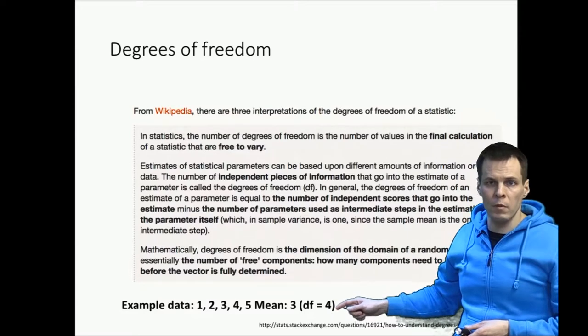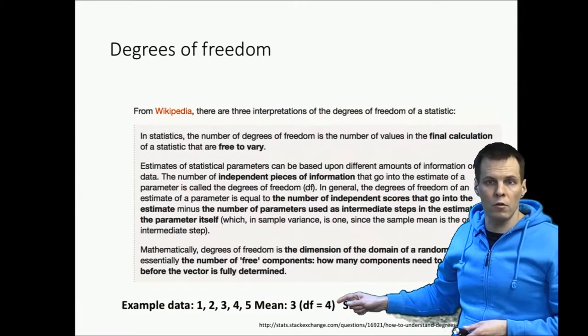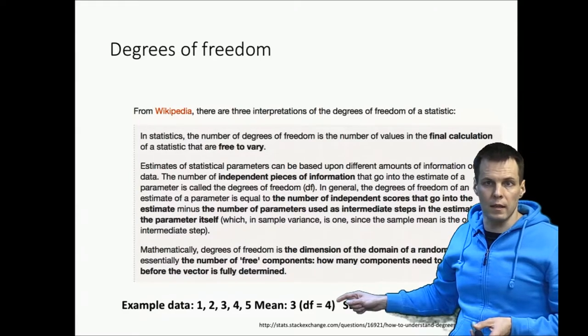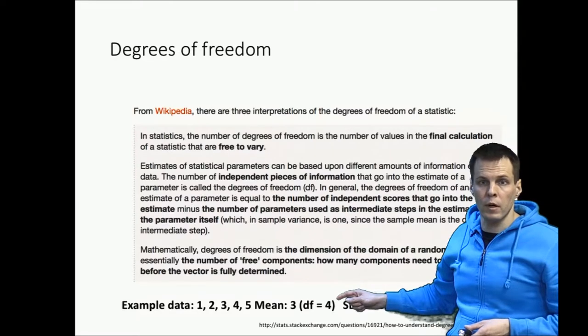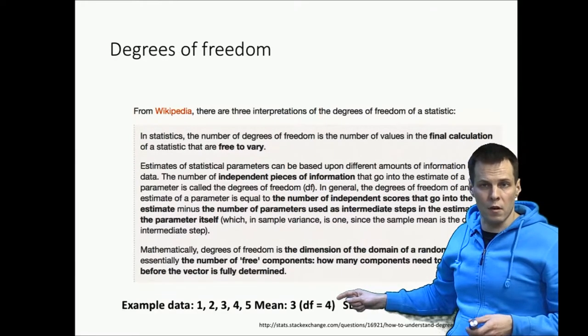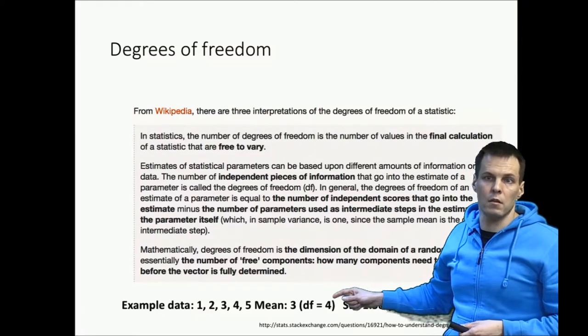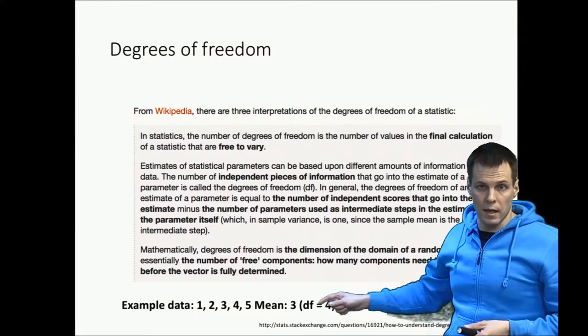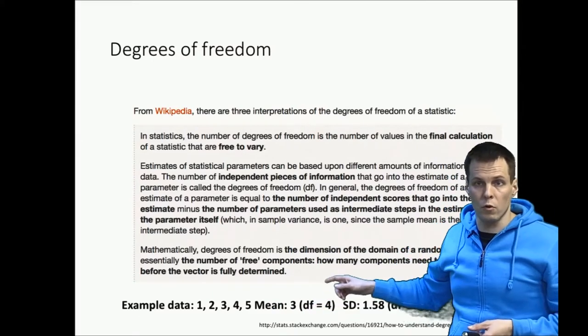What the degrees of freedom here tells us is that if we know the mean we only need to know four more numbers in the series to be able to say what the exact entire series is. So if we know that the first four numbers are one, two, three and four and we know that the mean is three then we can say that the final number must be a five because we have consumed all our degrees of freedom.